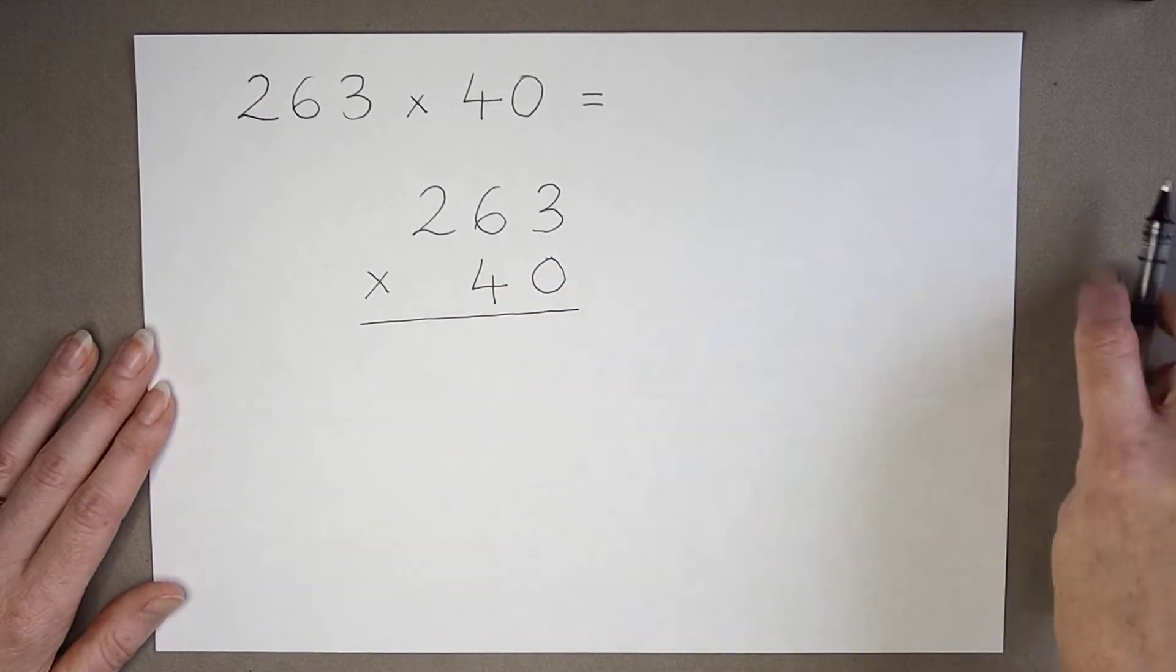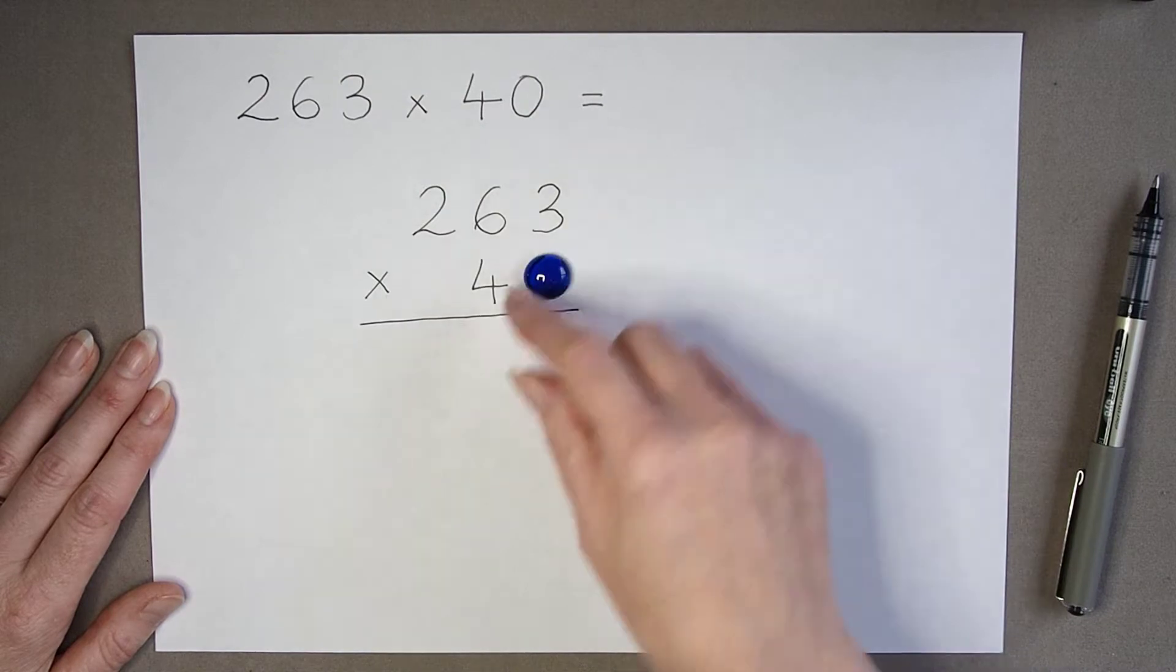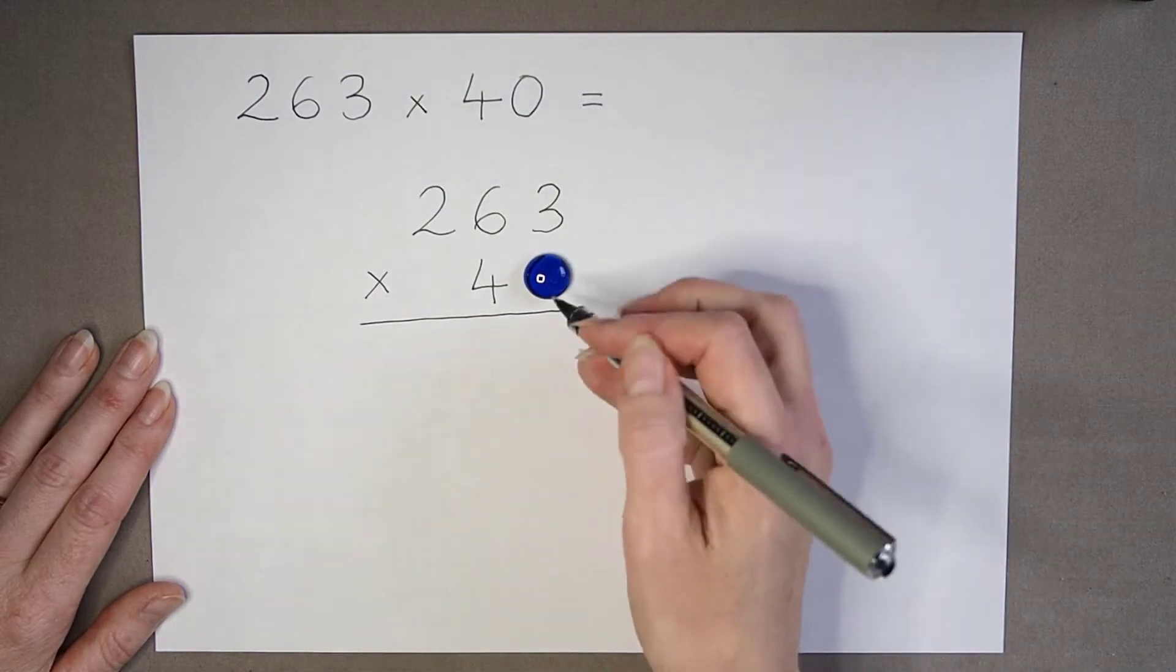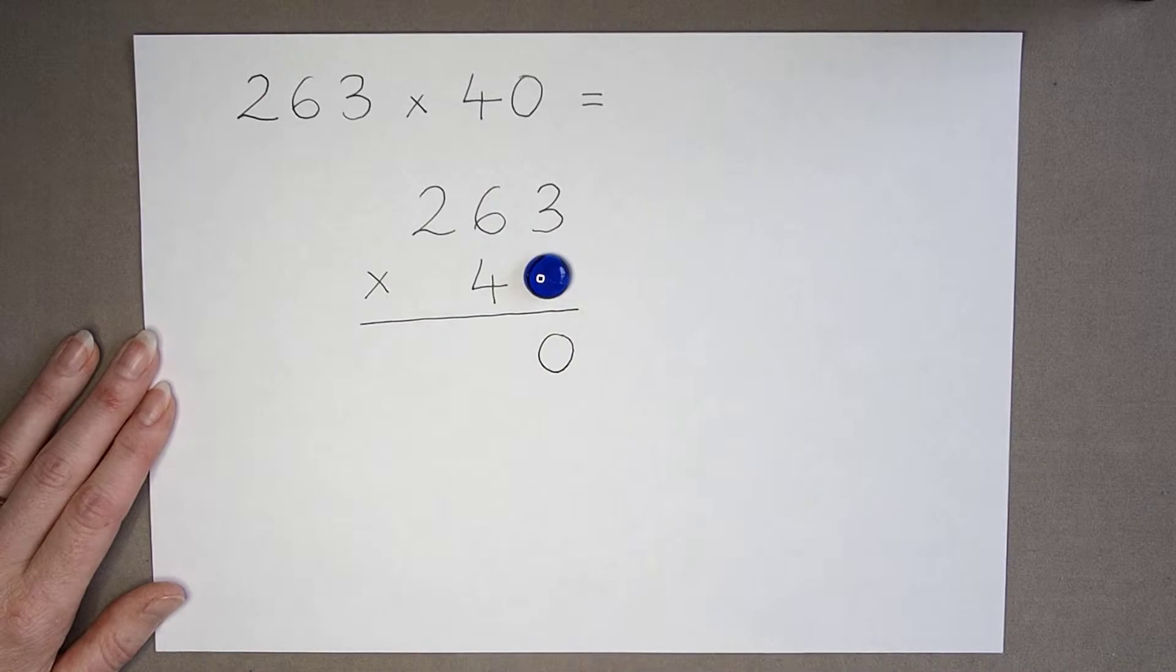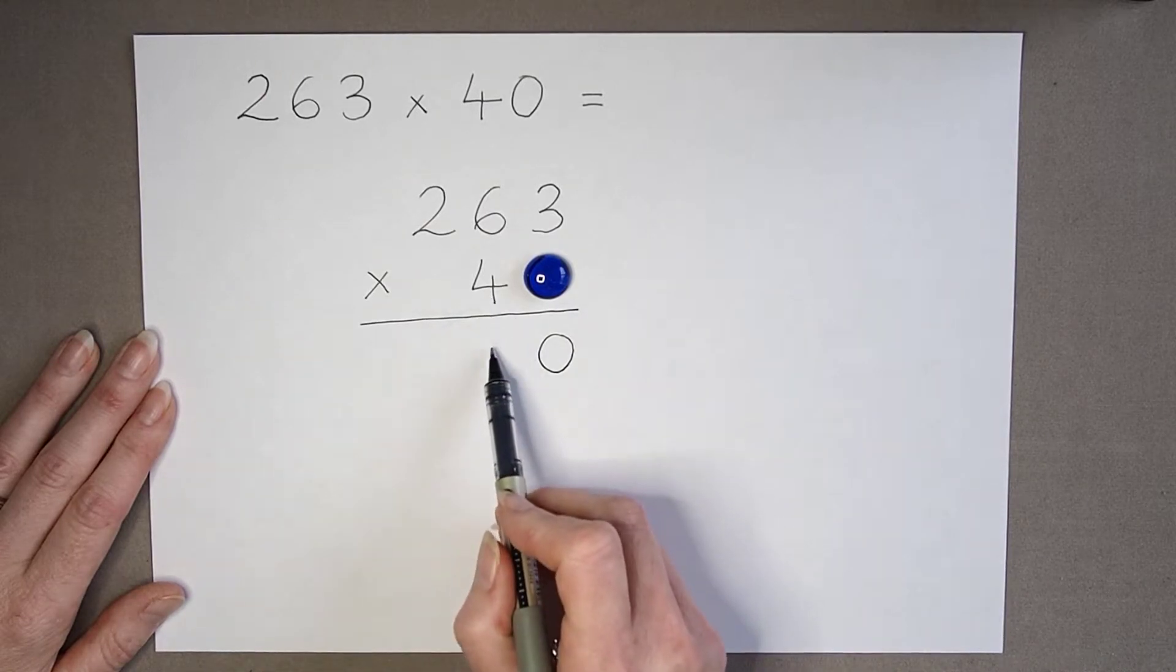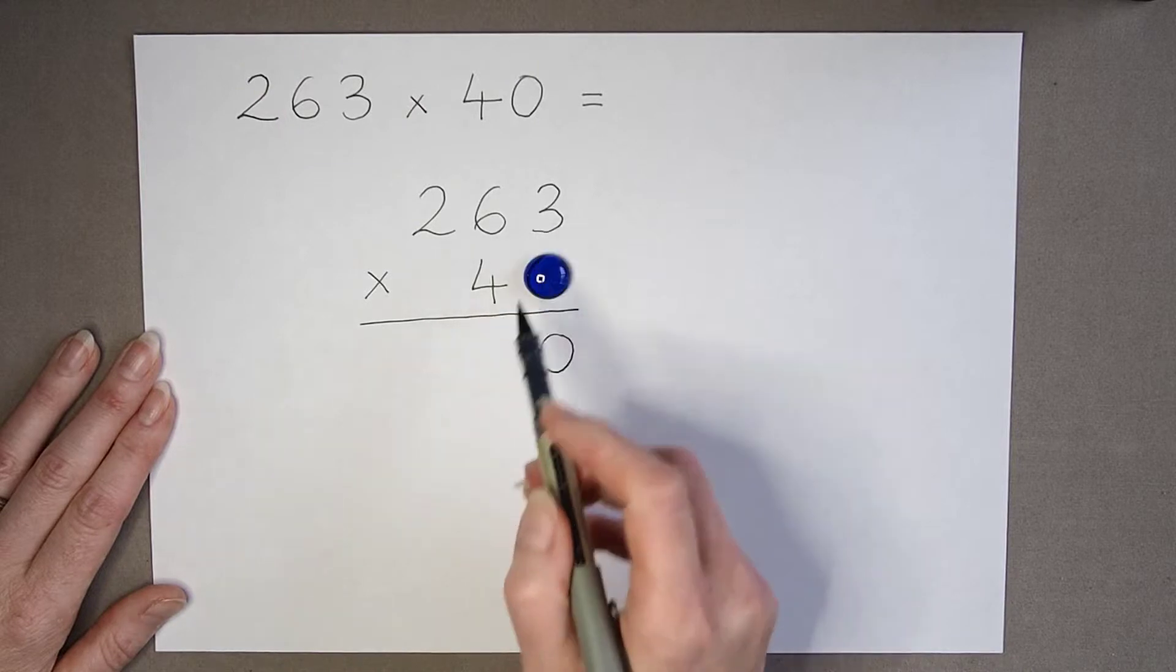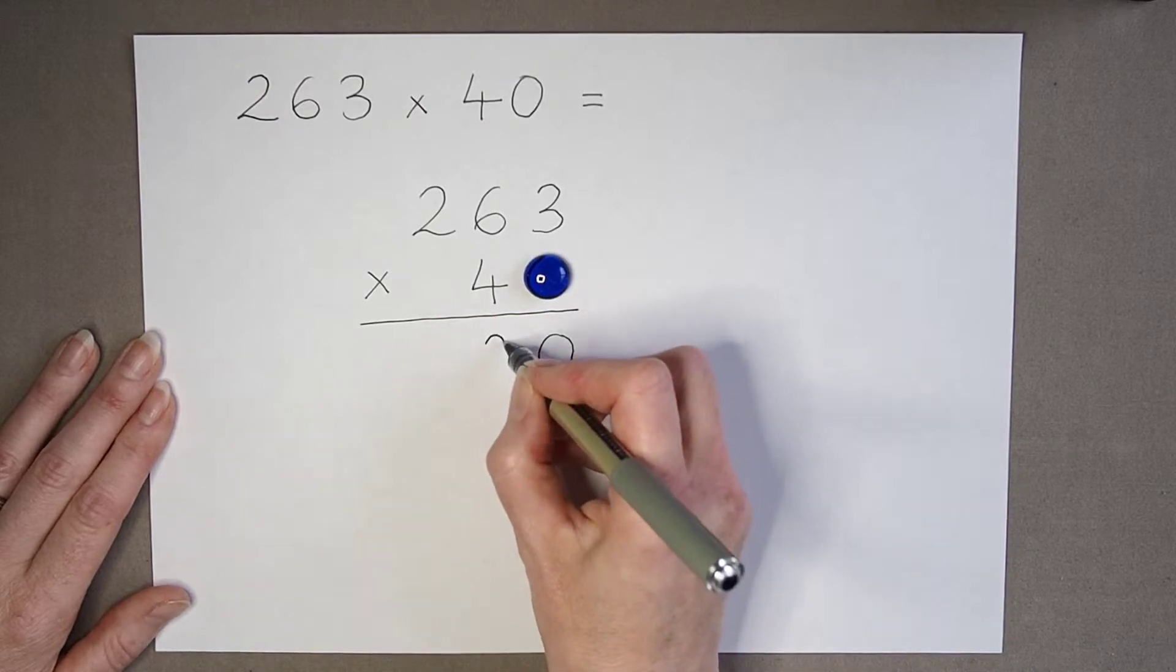But we need to remember, because when I'm looking at the tens, we've got to use that placeholder so that our answer actually starts in the tens column. So 4 times 3 is 12.